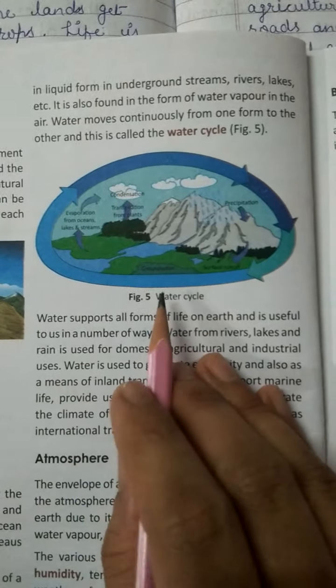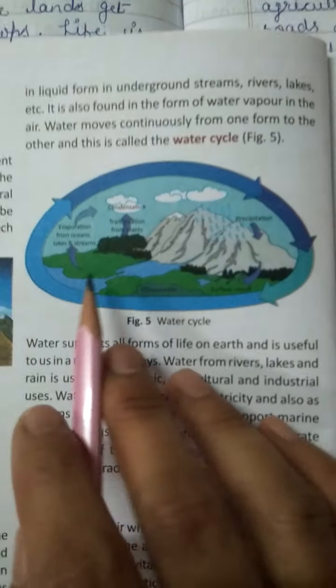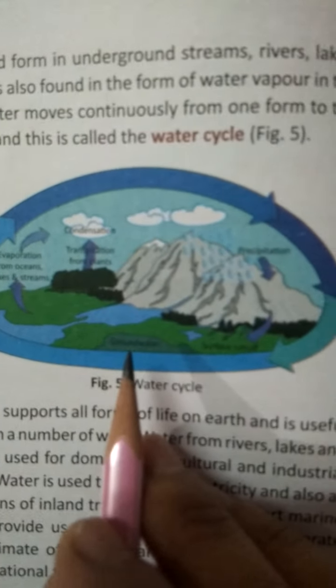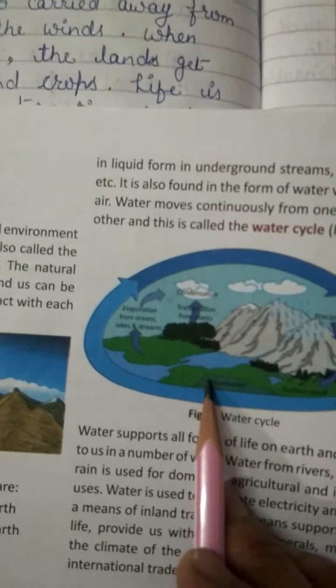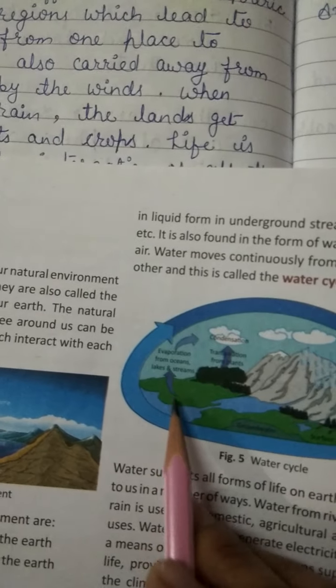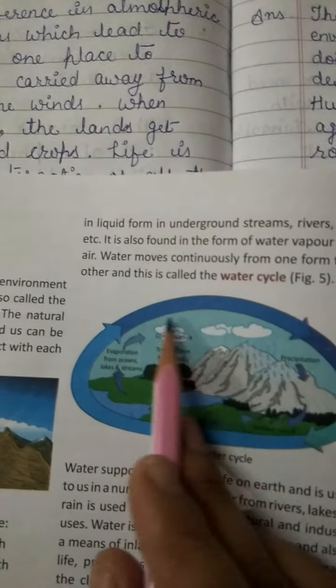Here is the diagram of the water cycle. You can see the river, groundwater, and the clouds forming through condensation.